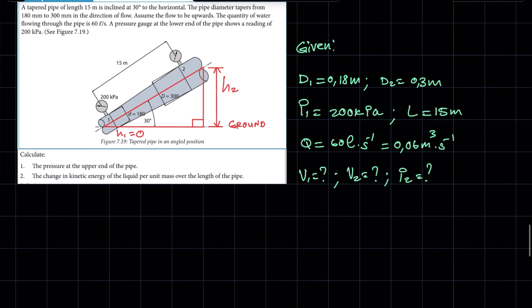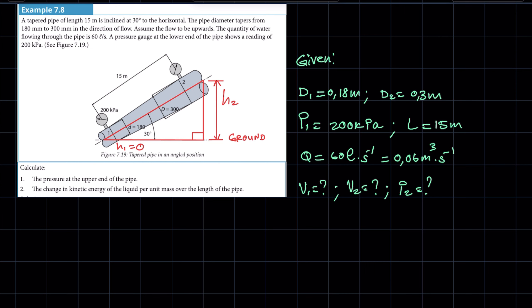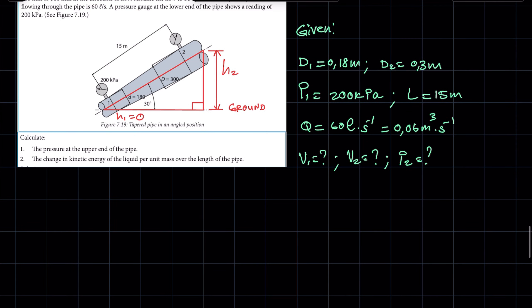The first question asks us to calculate the pressure at the upper end, so they're looking for p2. In applying Bernoulli's equation we need pressure energy, kinetic energy, and potential energy. For kinetic energy we need all our velocities — the velocity at the lower end as well as the velocity at the upper end — and we need our heights h1 and h2 for potential energy.